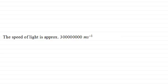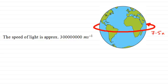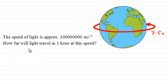And that would mean that if we had the Earth then this would be equivalent to light going round here just under seven and a half times every second. So if that's the case, how far will light travel in one hour at this speed?